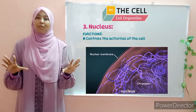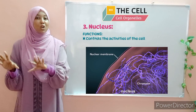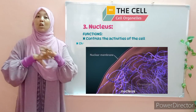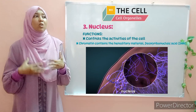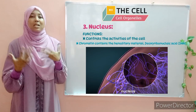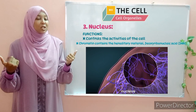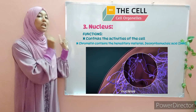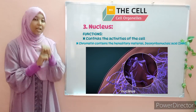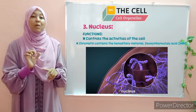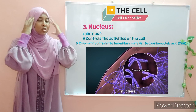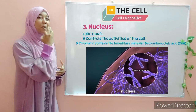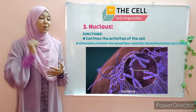Within the nucleus, we have two distinct structures. Number one, we have the chromatin. The chromatin contains DNA. DNA stands for deoxyribonucleic acid. DNA is a chemical that controls all the characteristics of an organism — that means every characteristic you have, be it physical or intellectual, is controlled by the DNA. And this is present within the nucleus.